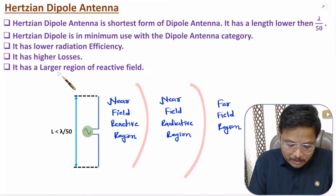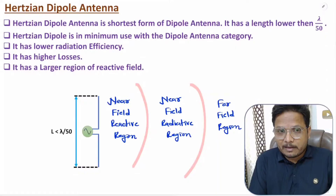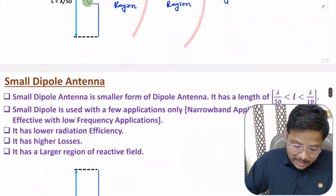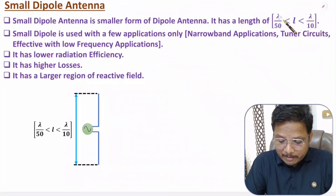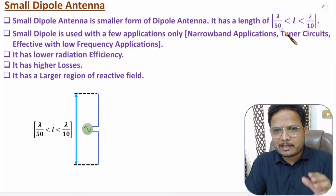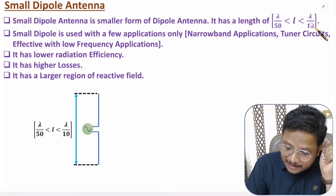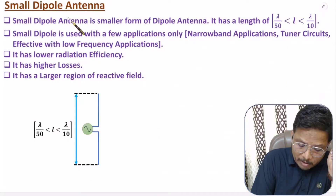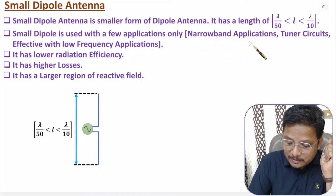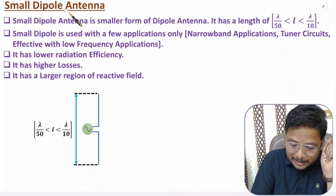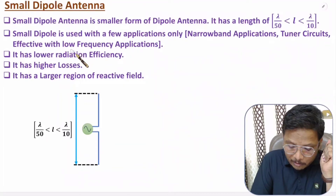Because of all these issues, the Hertzian dipole antenna has minimum applications in dipole antenna categories. Now, the second category is the small dipole. The small dipole antenna size is in between lambda by 10 to lambda by 50, so it is a bit bigger compared to the Hertzian dipole. Small dipole antenna has few applications — like narrowband applications and tuner circuits — and it is effective with low frequency applications.